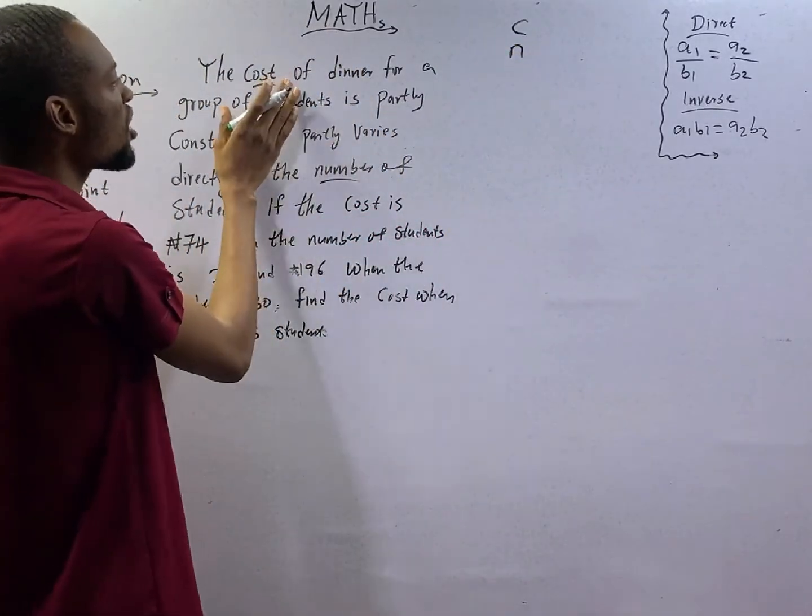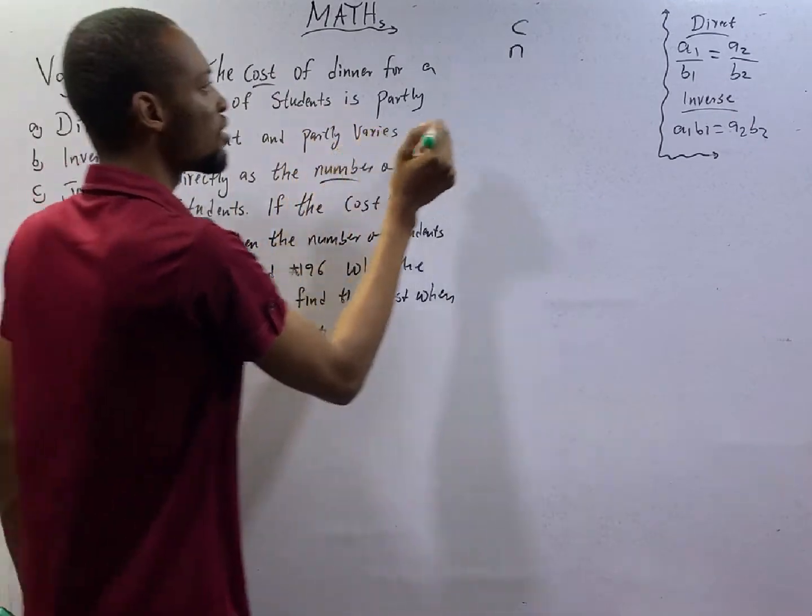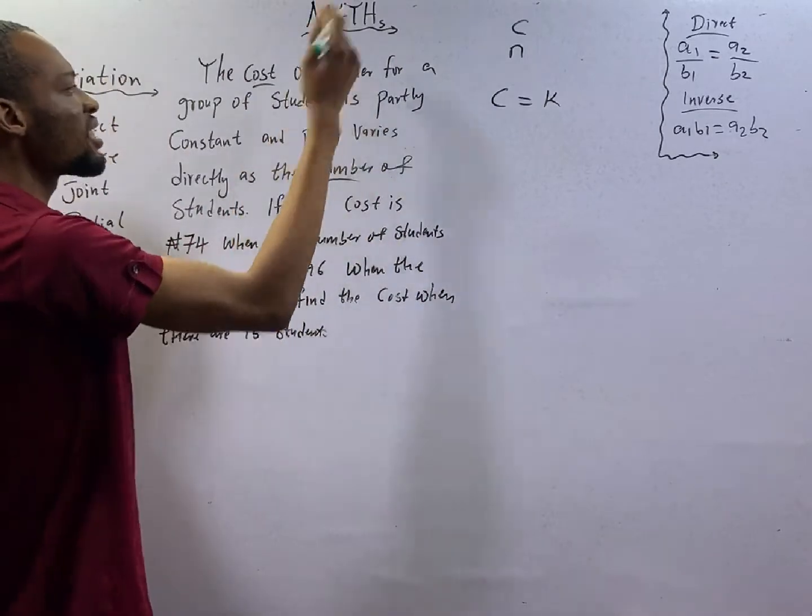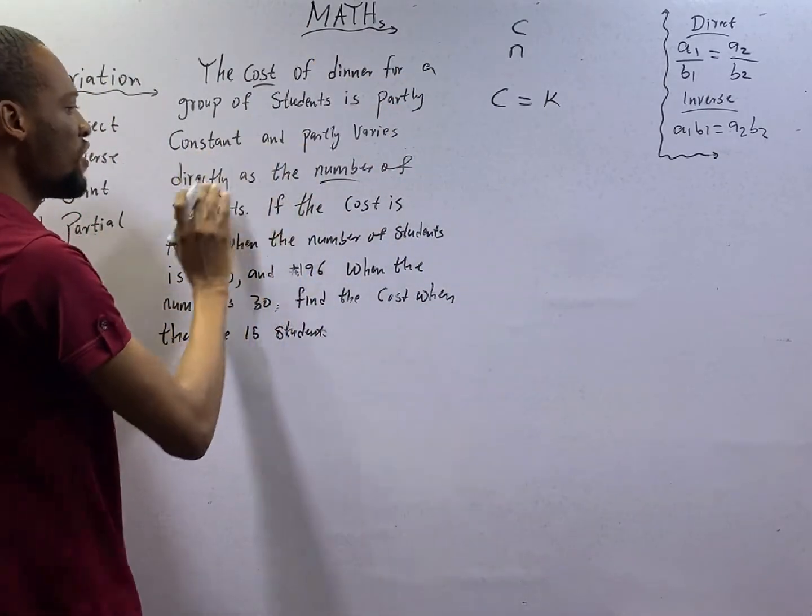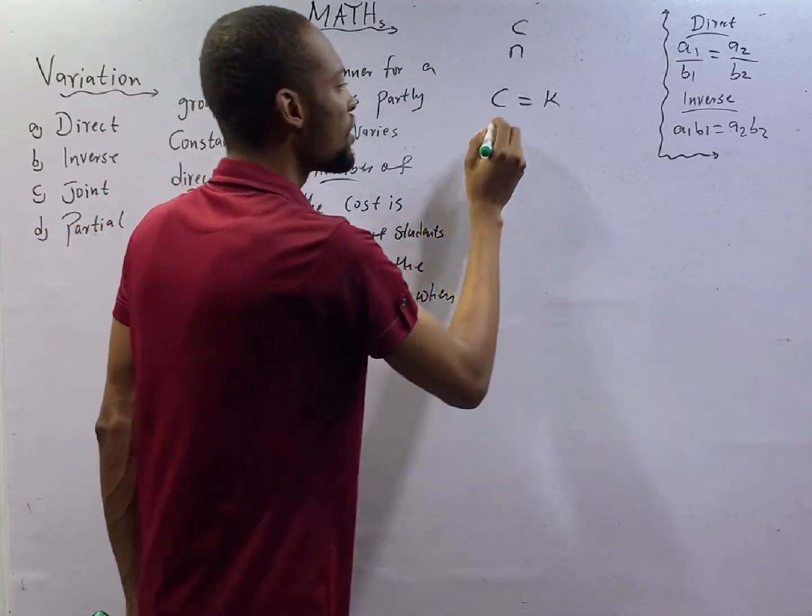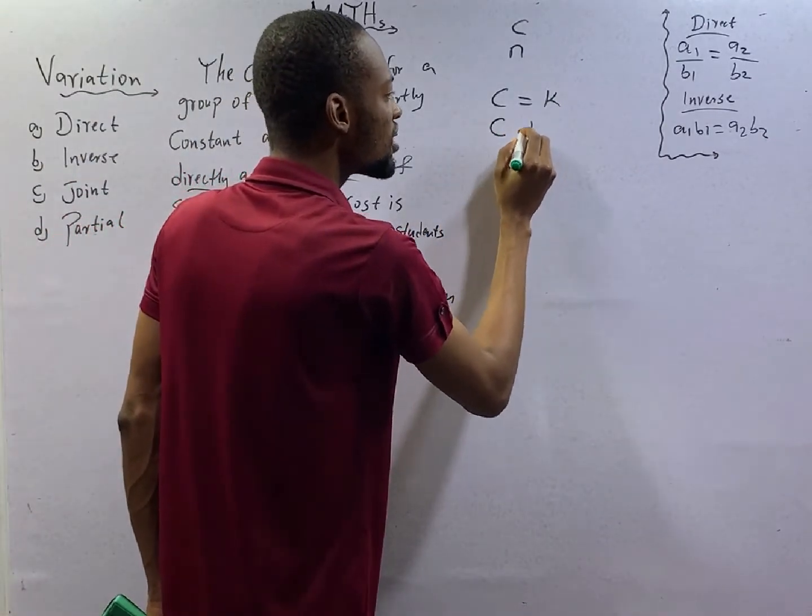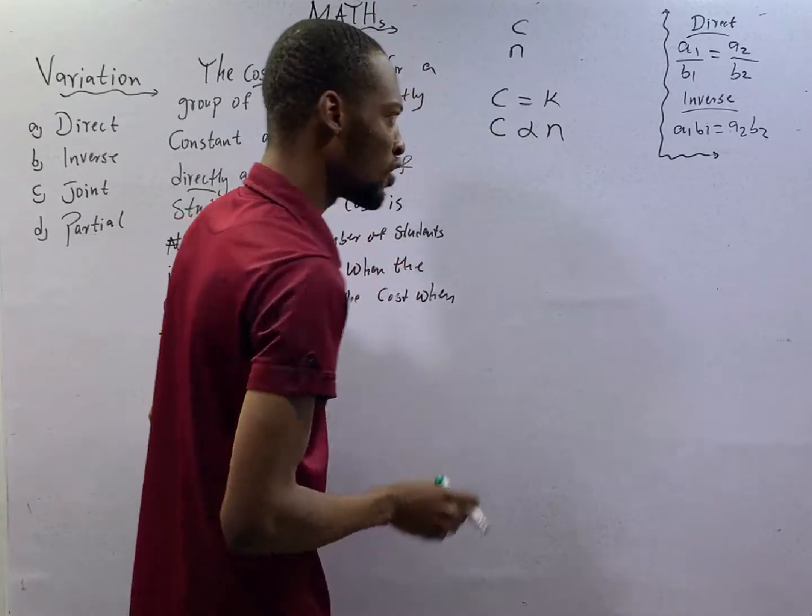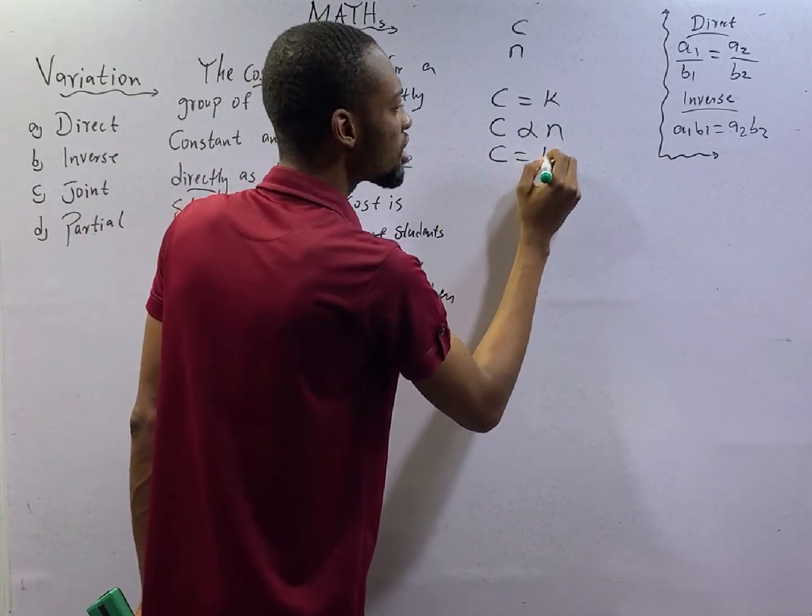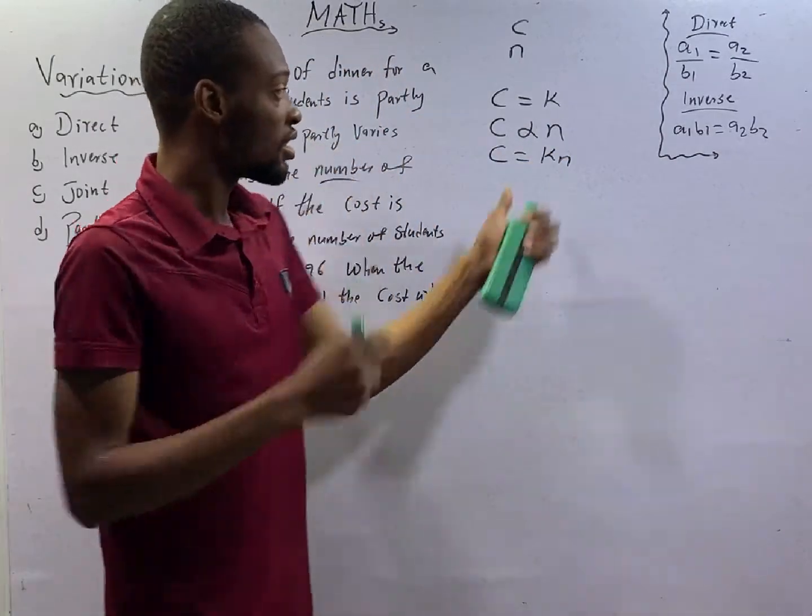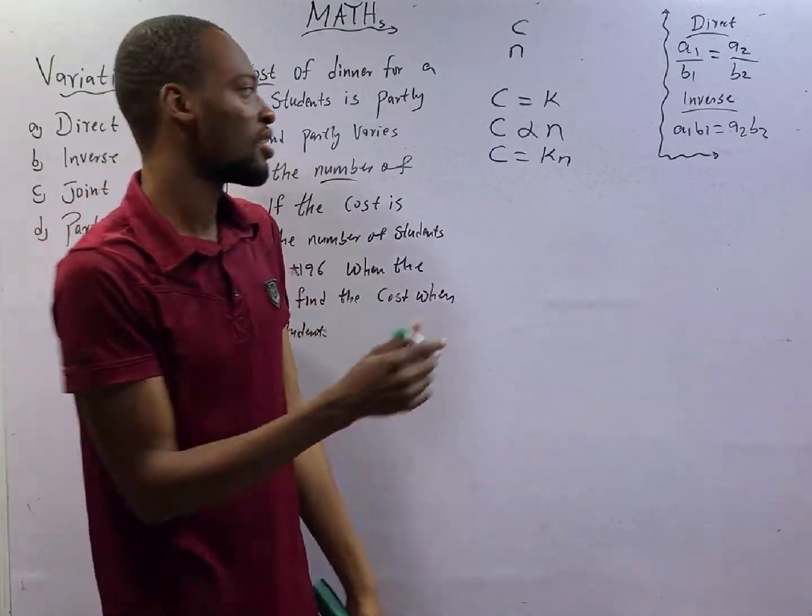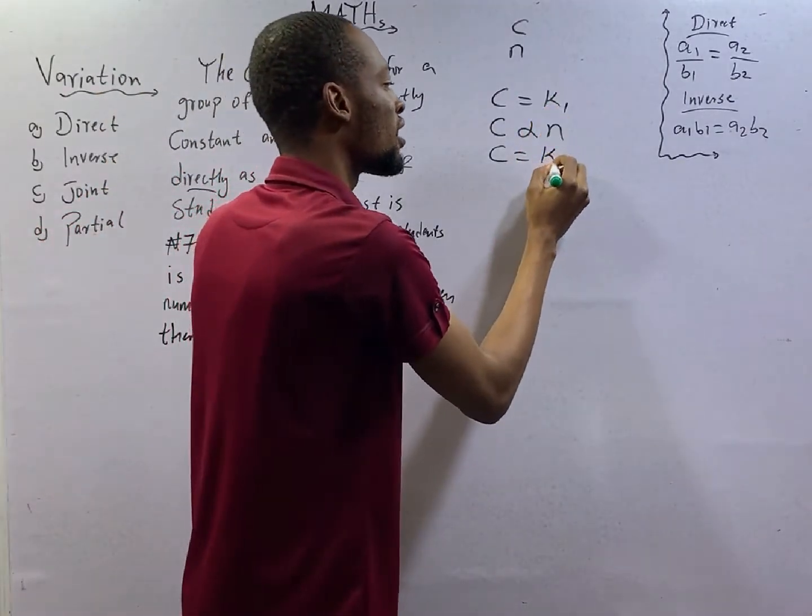The cost is partly constant. So C equals K. The cost varies directly as the number of students. So C equals KN. Here we have K. Let us separate the K by calling this K1 and K2.